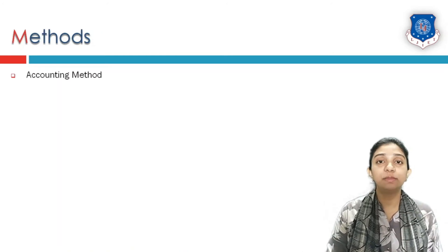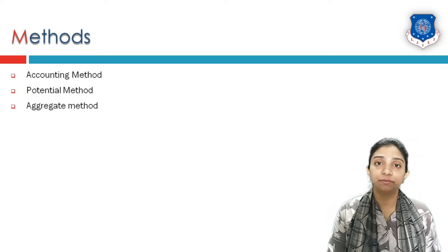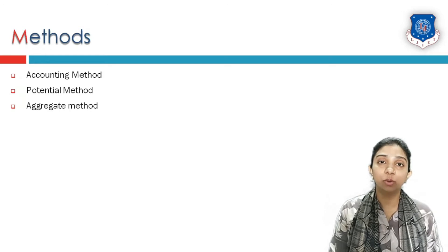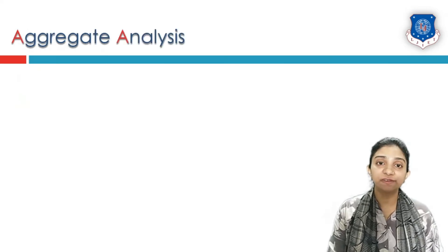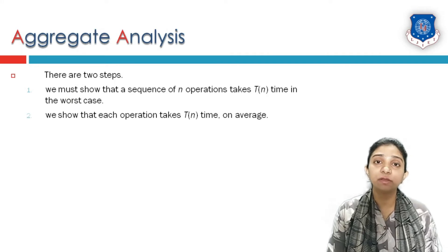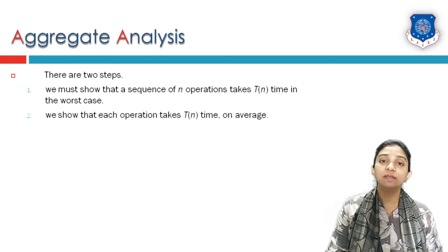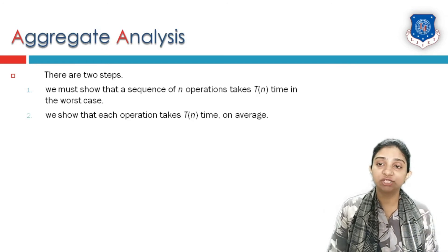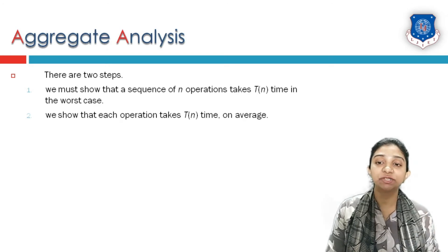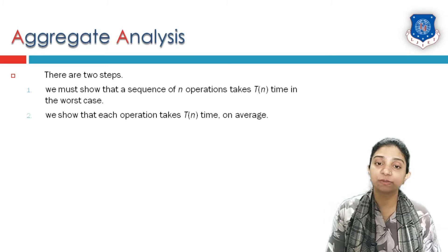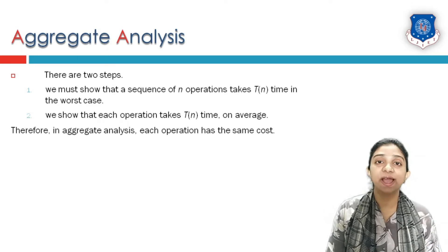What are the different methods to perform amortized analysis? There are three: the accounting method, the potential method, and the aggregate method. In this video, we are going to cover the aggregate method; the first two will be covered in a separate lecture. In the aggregate method, there are two steps. Step one: show that a sequence of n operations takes T(n) time in the worst case. Step two: show that each operation takes T(n)/n time on average.